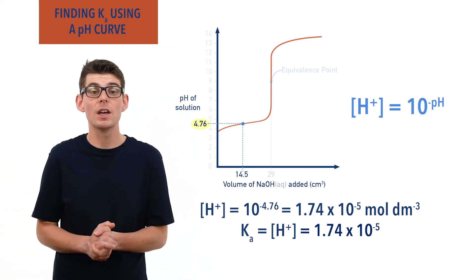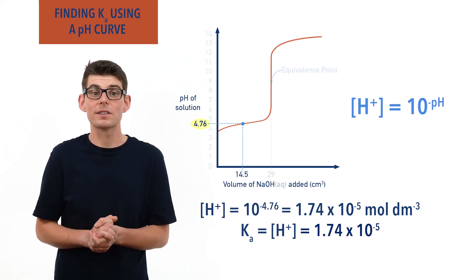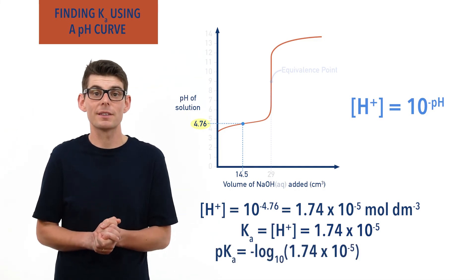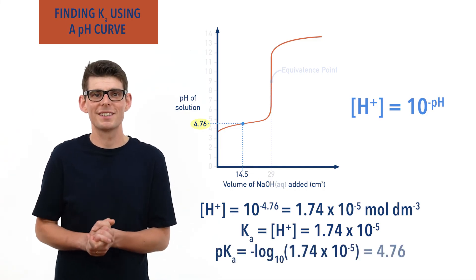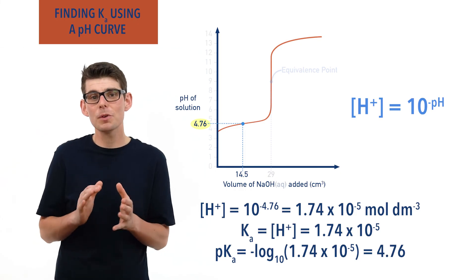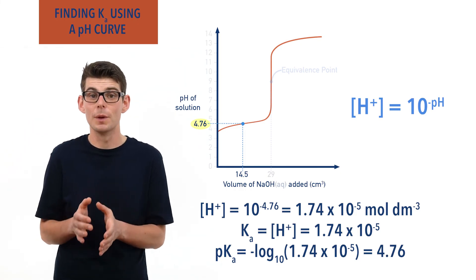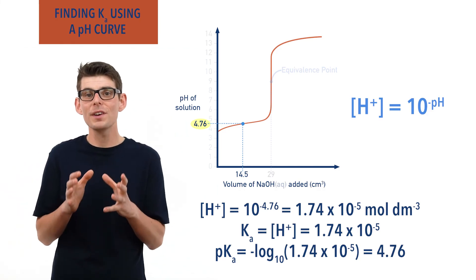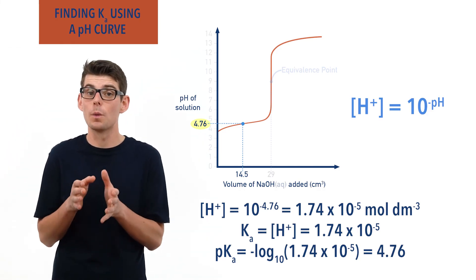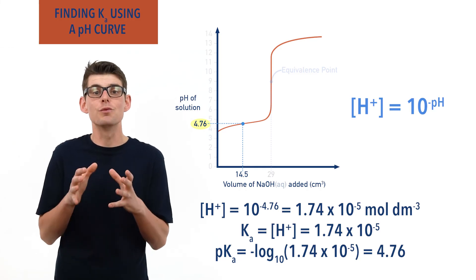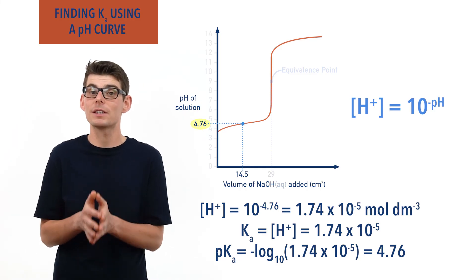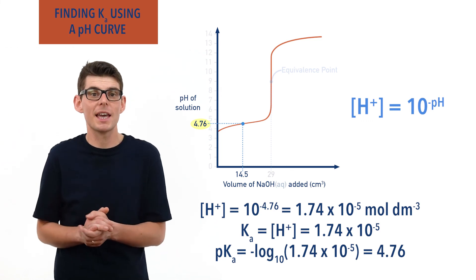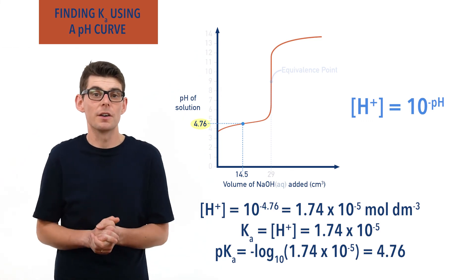To convert this to pKa, all we need to do is calculate minus log to the base 10 of Ka, giving a pKa of ethanoic acid of 4.76. You may have spotted that the pKa value is the same as the pH at the half equivalence point. I strongly recommend you work through in the way just shown however, as you really need to understand how to get to this final value, rather than just remember that pKa equals pH at the half equivalence point.